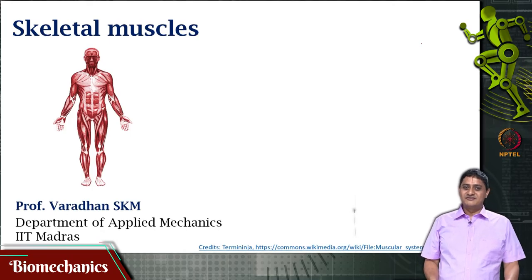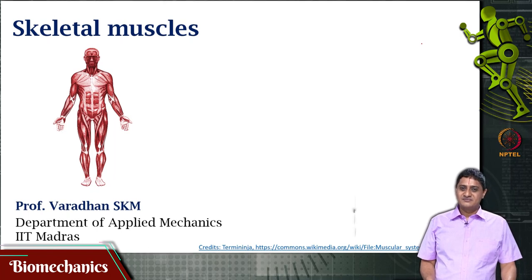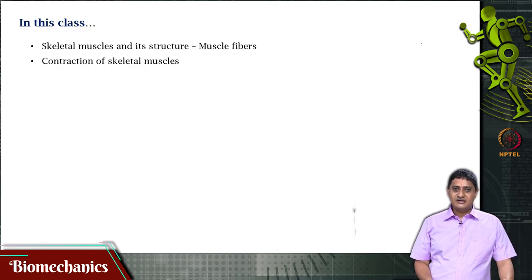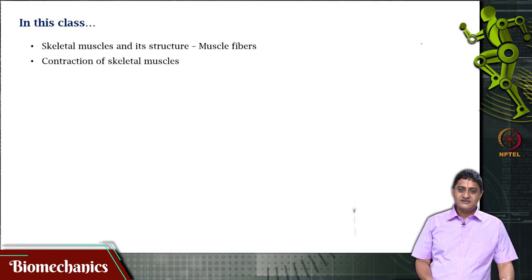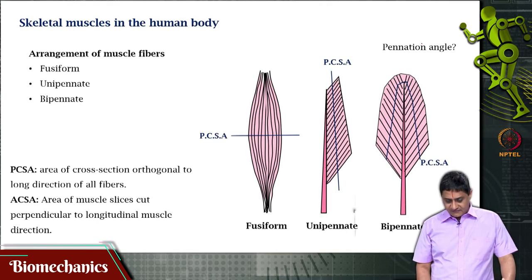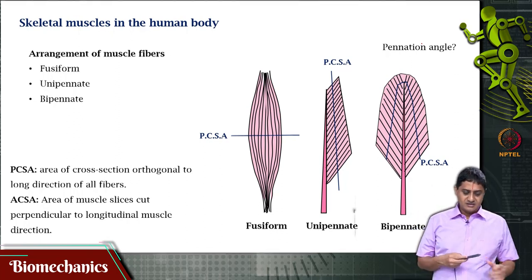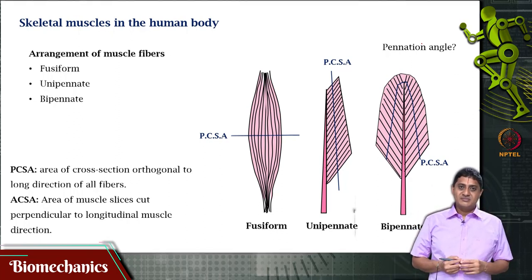Welcome to this video on biomechanics. We have been looking at skeletal muscles. In this video we will be looking at the structure of skeletal muscles, muscle fibers and how they are arranged, and how based on contraction we can classify different types of contractions that happen within skeletal muscles. We already started having this conversation about different types of muscles based on the arrangement of fascicles or fibers within the muscle.